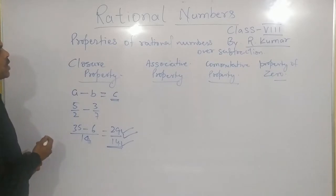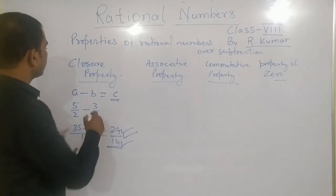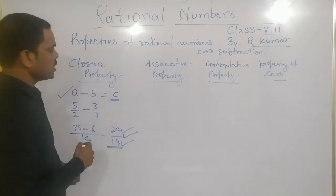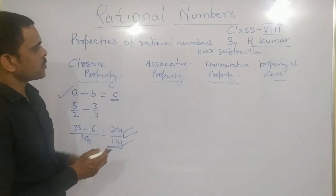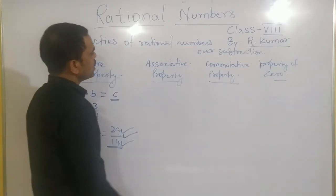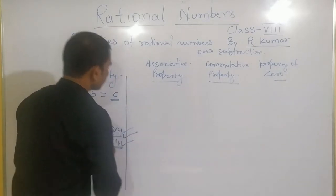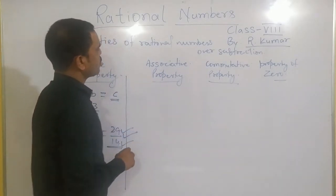Means, closure property over subtraction, we can see this satisfied for subtraction also. Now, I come to the next, that is associative property.